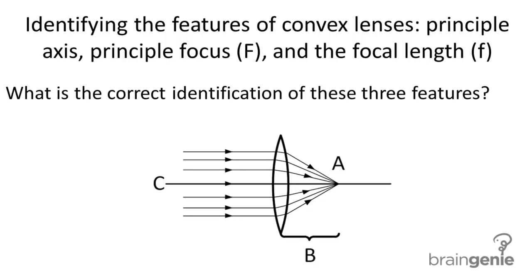Identifying the features of convex lenses: principal axis, principal focus, and the focal length. What is the correct identification of these three features? A, B, and C. So let's start with A. A, we know to be the principal focus.